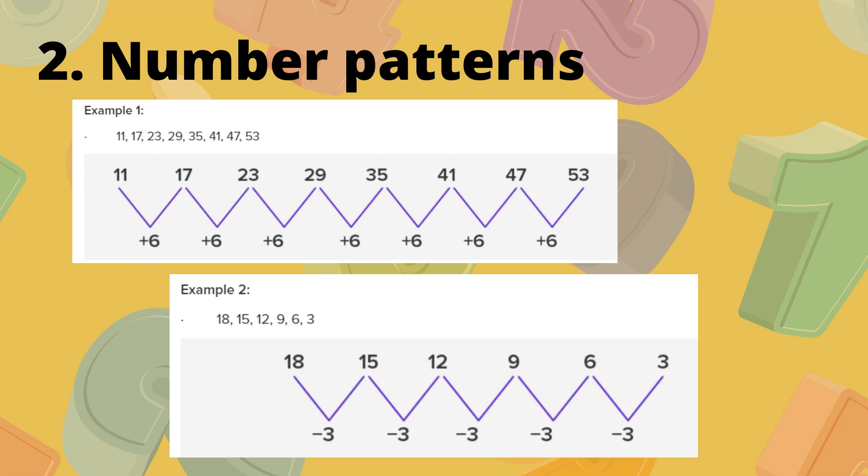The second example is 18, 15, 12, 9, 6, and 3. From here, if we are going to start from 18, you have to deduct 3 to make it 15. And then the next one, 15 minus 3 is 12. 12 and then you have to deduct 3 also will become 9. The pattern is easy to identify in this example.